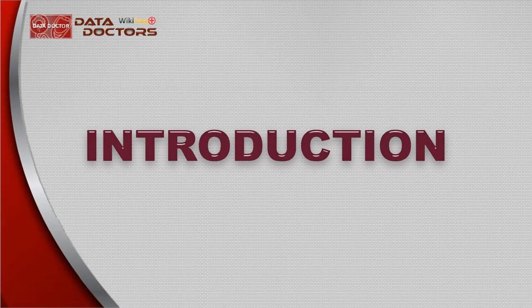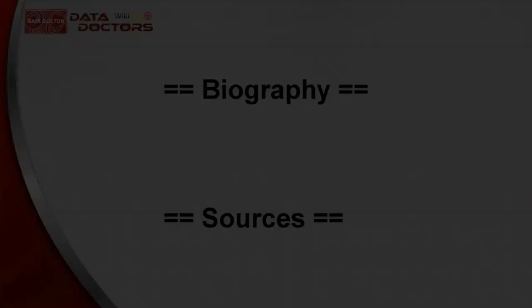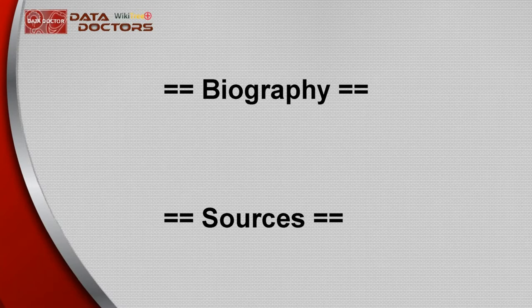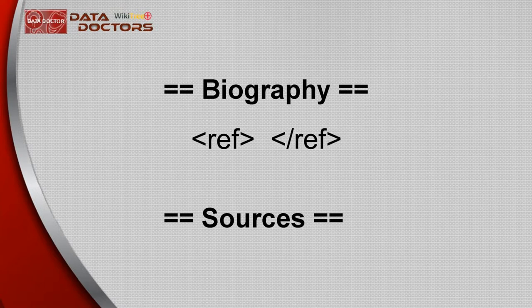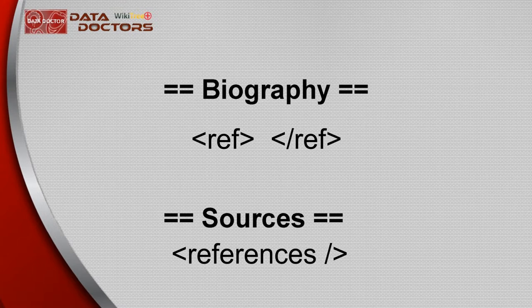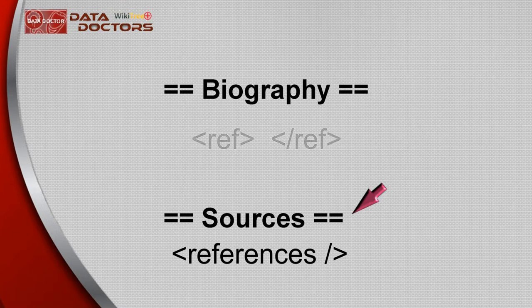Reference tags come in two parts. The first is the inline citation, which goes in the biography section — a pair of open and closed ref tags. The second part, which goes in the sources section, is the references tag. Note that there should be a space between the word 'references' and the forward slash.